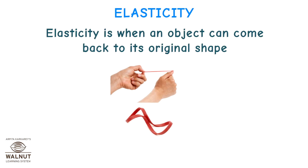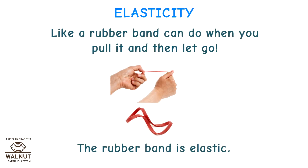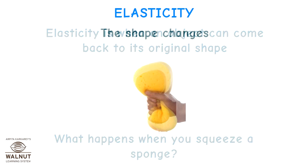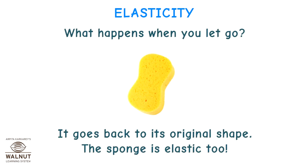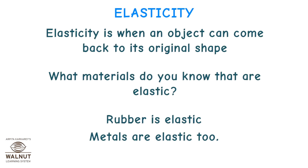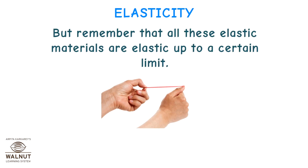Elasticity is when an object can come back to its original shape — like a rubber band when you pull it and then let go. The rubber band is elastic. Rubber is elastic, and metals are elastic too. But remember that all elastic materials are elastic only up to a certain limit.